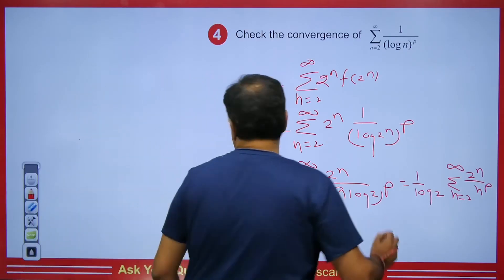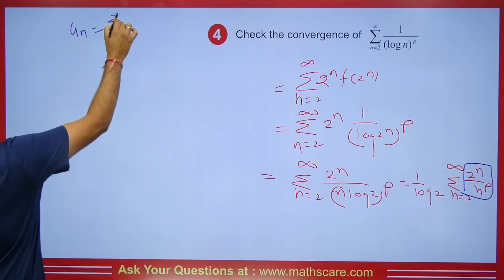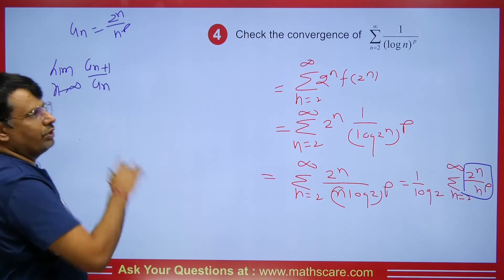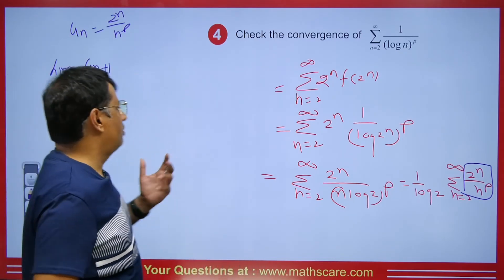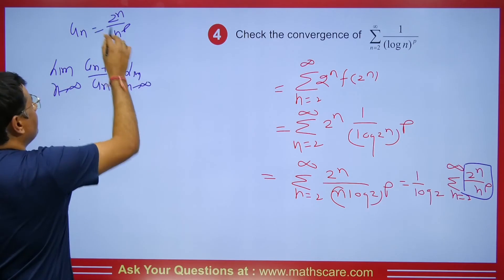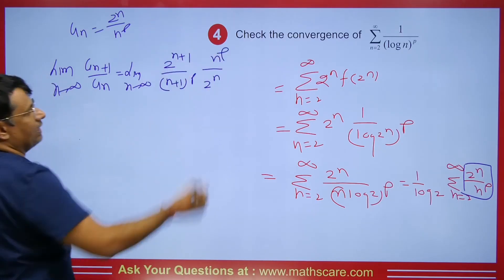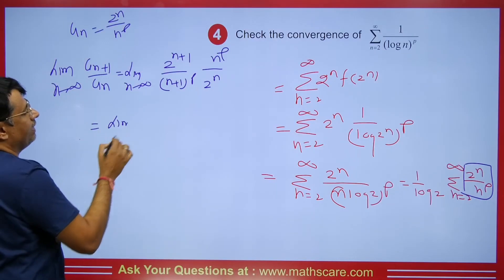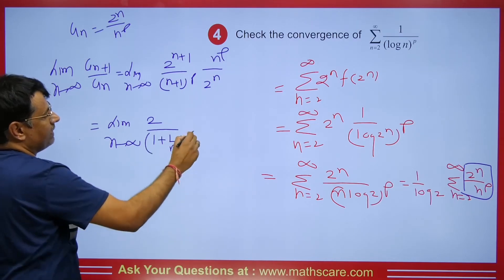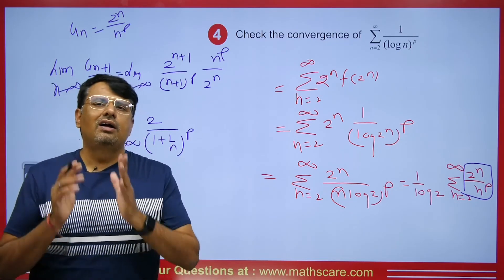I will consider u_n = 2^n / n^p and apply the D'Alembert Ratio Test. We know that if the limit as n → ∞ of u_{n+1} / u_n is less than 1, the series is convergent. Solving: limit n → ∞ of [2^(n+1) / (n+1)^p] divided by [2^n / n^p]. The 2^n cancels, leaving 2 on top, and n^p / (n+1)^p = 1 / (1 + 1/n)^p. Taking n → ∞, we get 2, which is greater than 1 — so this series is divergent.